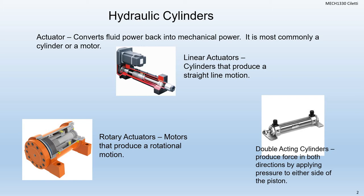First thing we want to talk about is what an actuator is. An actuator converts the fluid power back into mechanical power. We use two things for the most part: one is a cylinder and the other is a motor. We use that fluid power and turn it into either a linear actuator, which is our cylinder, so we get linear straight motion, whether it's an x-axis or a vertical axis. Or we can get our rotary actuators, which are motors, so we get rotational motion out of that.